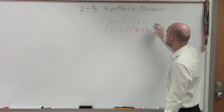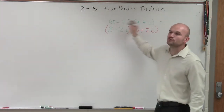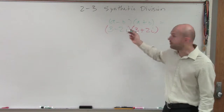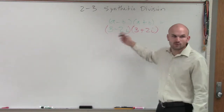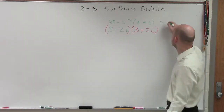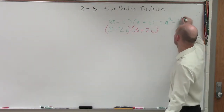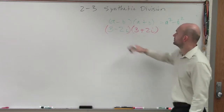So therefore, if I wanted to multiply this out, you can do FOIL — there's nothing wrong with doing FOIL — but you know that the middle terms are going to add up to zero. So I can just do a squared minus b squared.